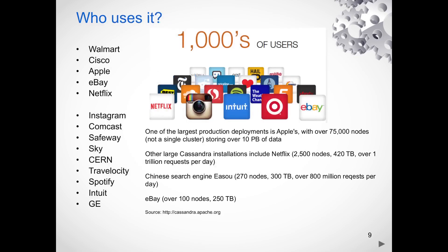Let's take a look at which companies use Cassandra — this is just a representational list. Netflix runs 2,500 nodes. Apple's cluster — not a single cluster but multiple clusters — was published at 75,000 nodes. Based on more recent readings, Apple's cluster is now over 170,000 nodes.